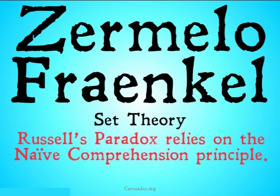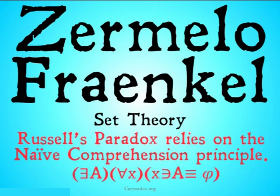This theory says that the problem with naive set theory is the comprehension principle. Russell's paradox relies on the naive comprehension principle, which goes as follows: there exists an A such that for all X, X is a member of A if and only if condition φ applies. If you had no idea what I just said, try to follow along as we go on.